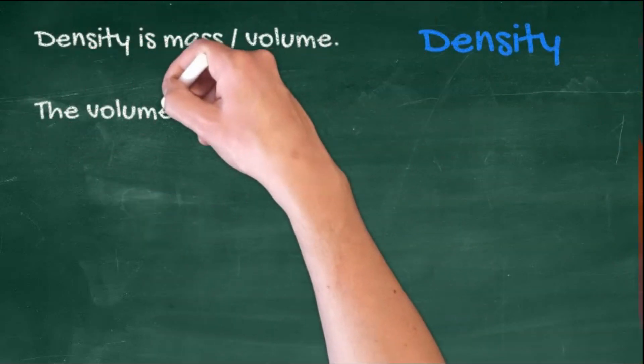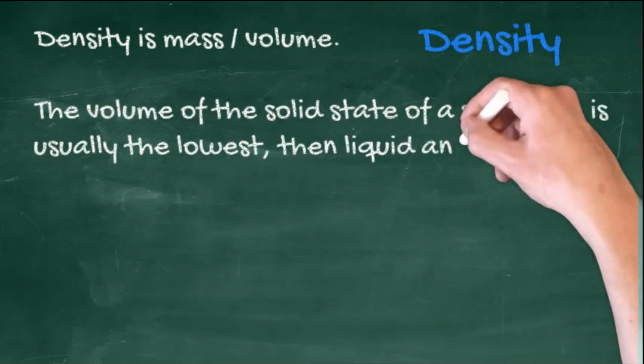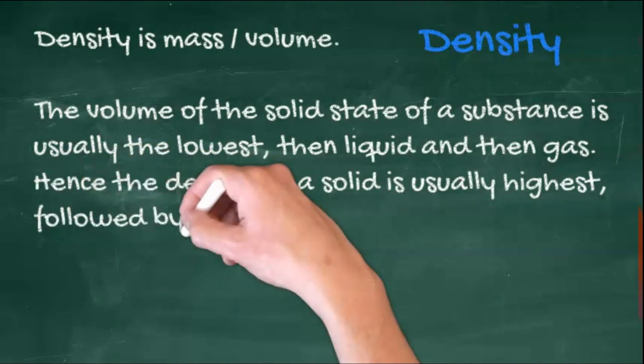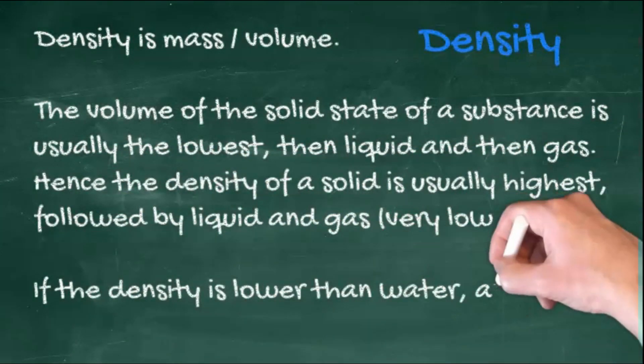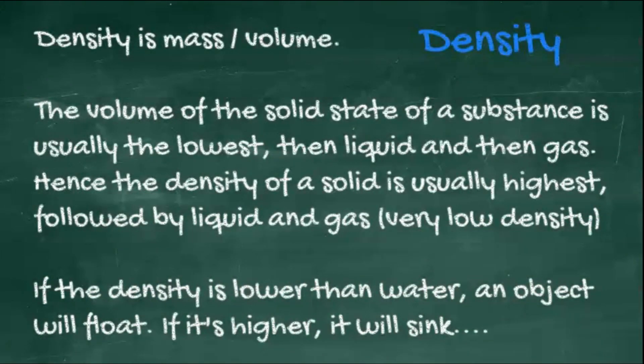There is therefore a connection between the states of matter and density. Density is mass divided by volume. The volume of the solid state of a substance is usually the lowest, then the liquid, and then the gas. Hence the density of a solid is usually highest, followed by liquid and gas. And of course gas has a very low density indeed.